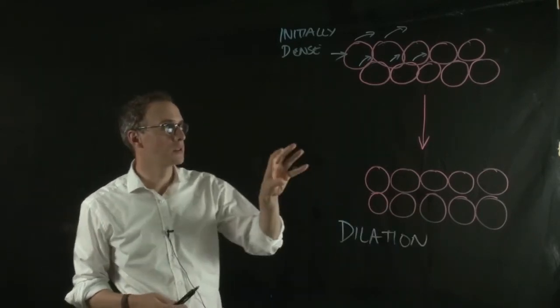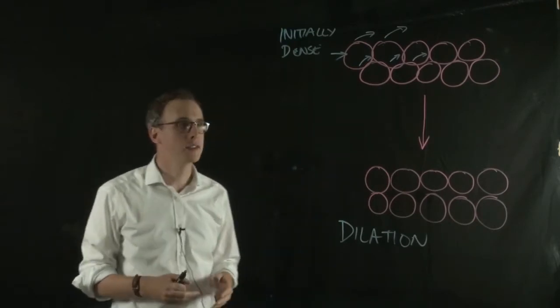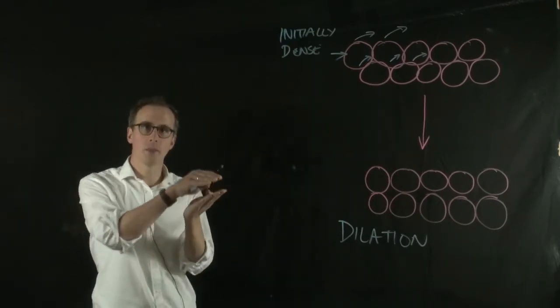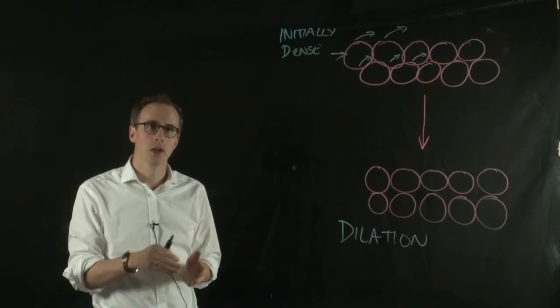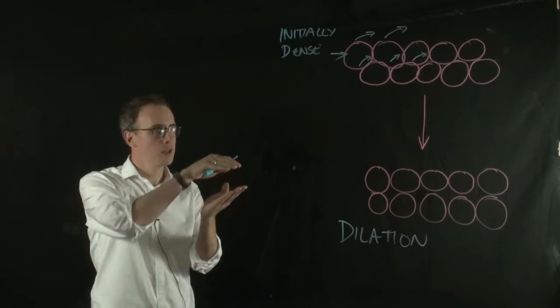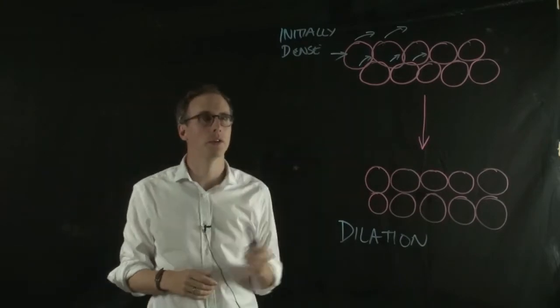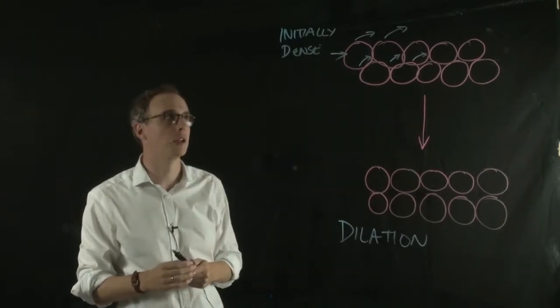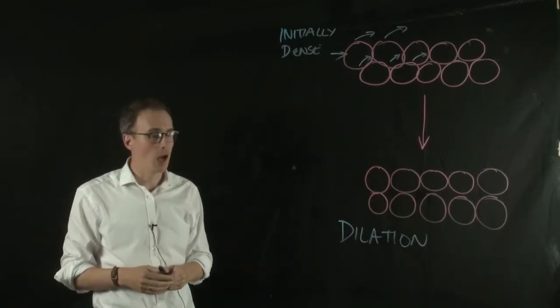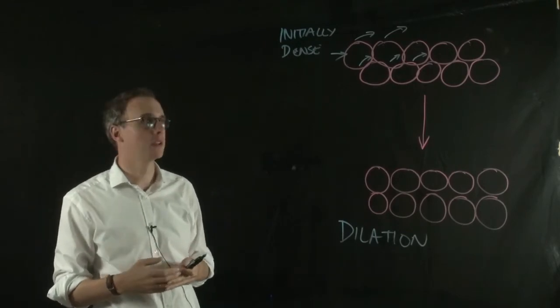So the soils dilate when they are initially dense. And because of that, it takes a little bit extra shear force to get the particles on top over the underlying particles. And that's why we get a peak shear strength.